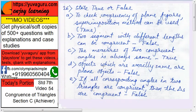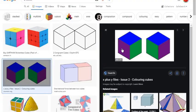Objects which are exactly same are plane objects. That is false. See, these two cubes, they are exactly same, but are they congruent? No. Are they plane figures? No, because these are solid objects.